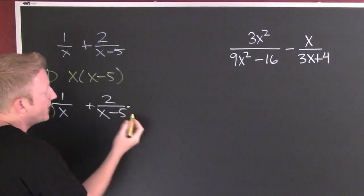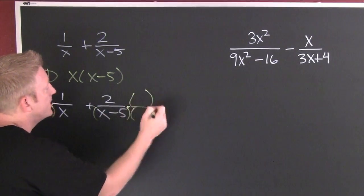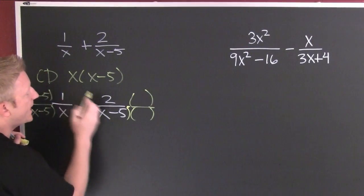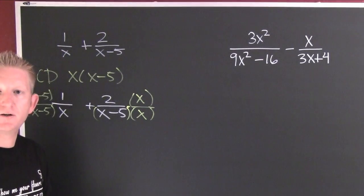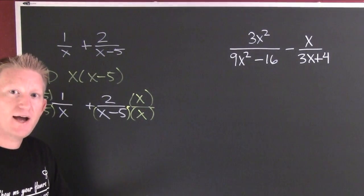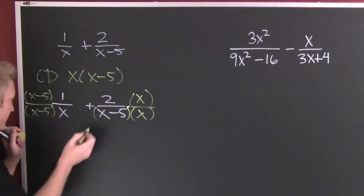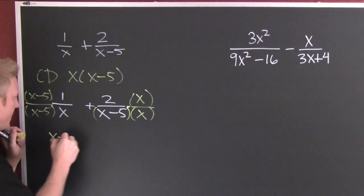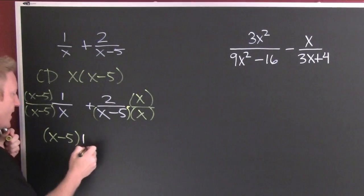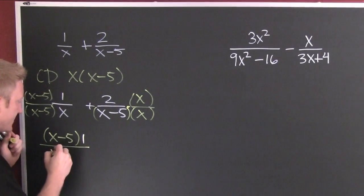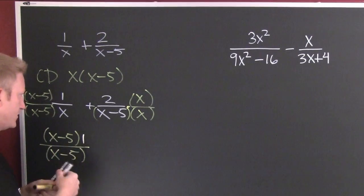Now I'm over here. What am I gonna multiply this denominator by that the common denominator has? It appears this denominator is missing an x. So I'm gonna multiply by x over x. Now in each one of those terms, how do you multiply the fractions? Straight across.